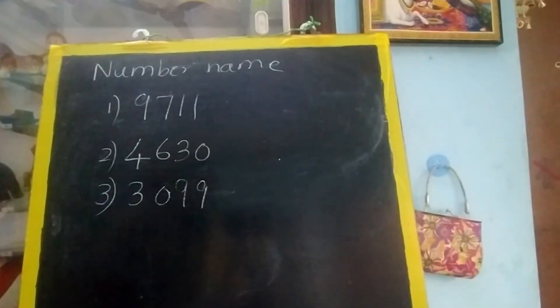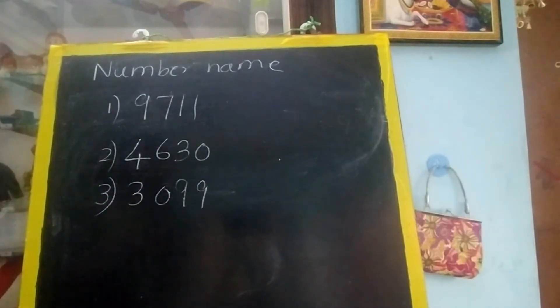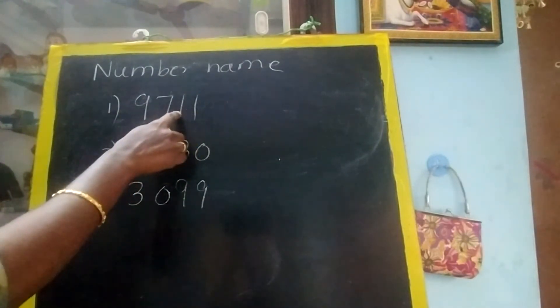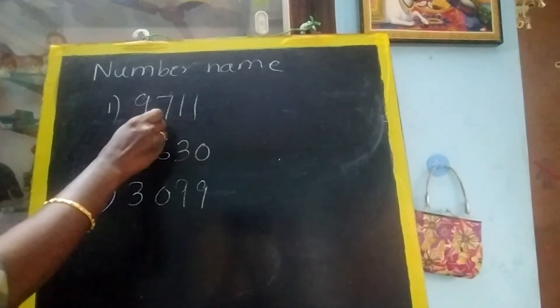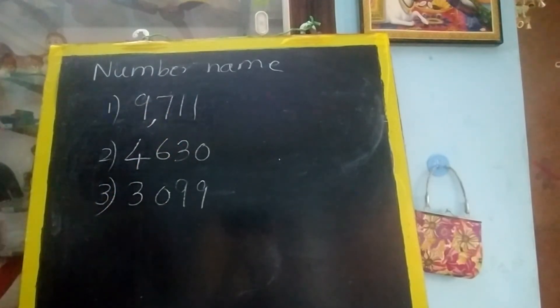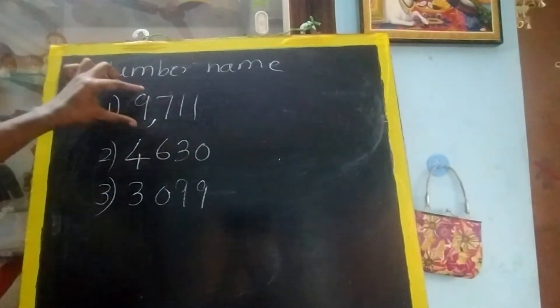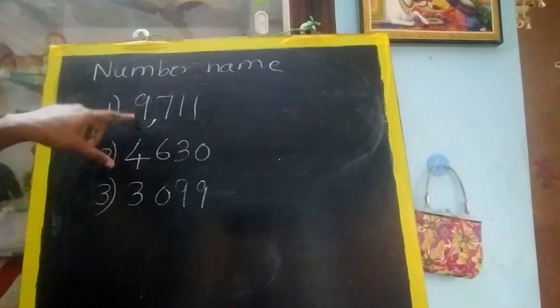The easy way to read is the comma method. Always in the Indian number system, from the last 3 digits you have to put a comma — 1s, 10s, 100s — here you put the comma. Now read: this is 1000. 9,711.